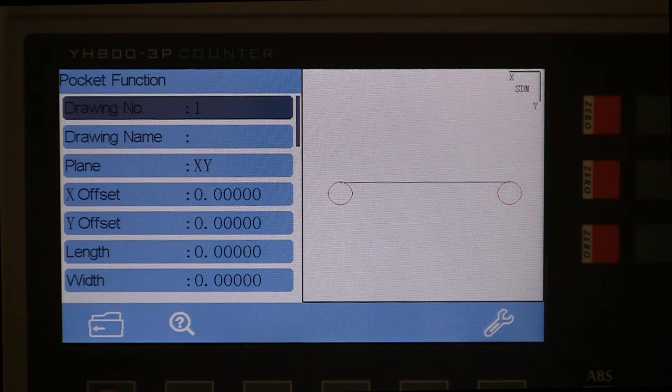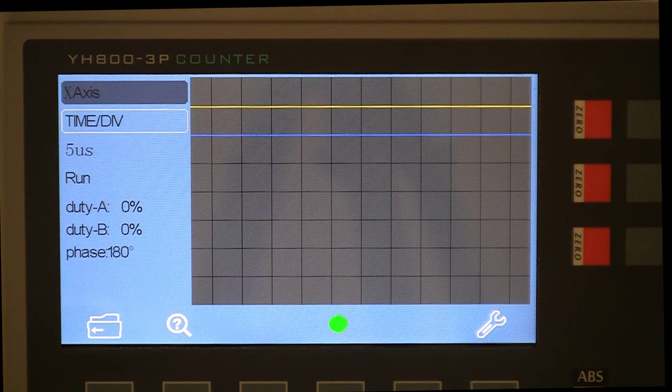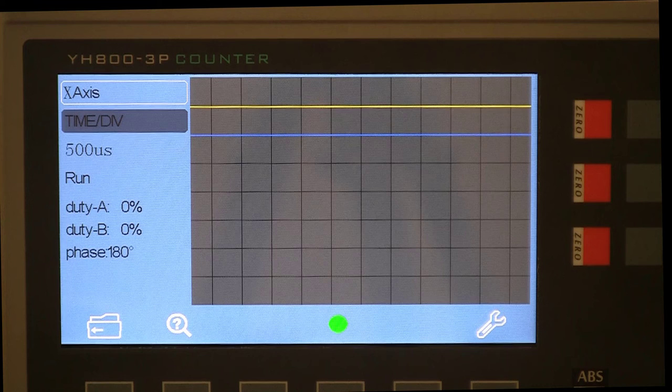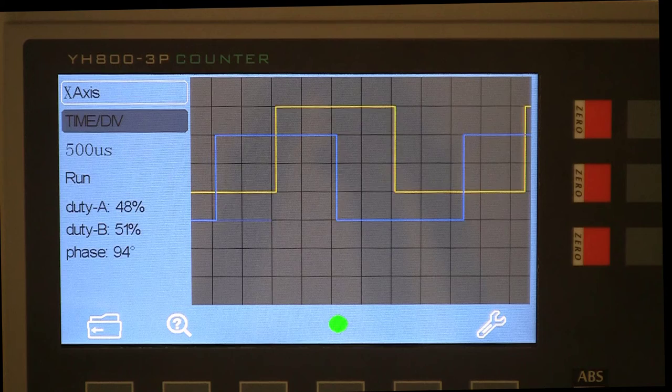And here's the most interesting thing. It gives you a sort of oscilloscope display. There's an oscilloscope-like function which gives you information about the two different phases coming from your encoder, the duty cycle, the relationship and the phase that they're in.